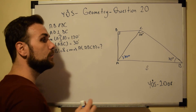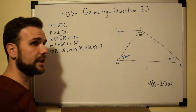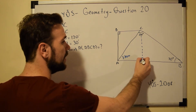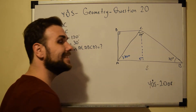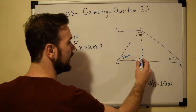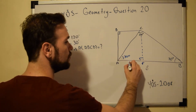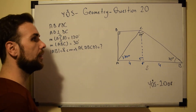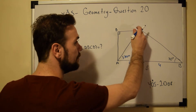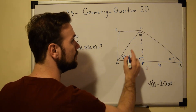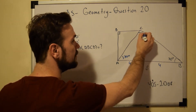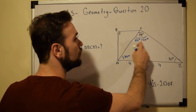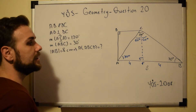Now we have an isosceles triangle. If I draw a perpendicular line to the base, the base is split into two equal parts. Naming this point F, AF will be equal to 4 and FB will also be equal to 4. By drawing this perpendicular line, the 120-degree angle is also split into two equal parts, creating two equal angles of 60 degrees.